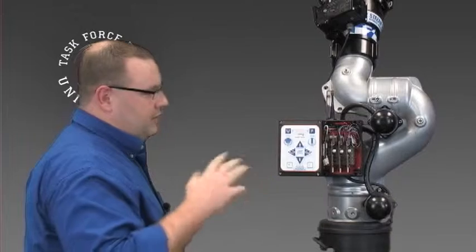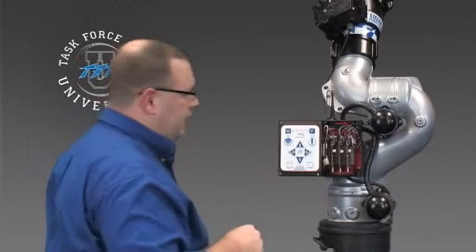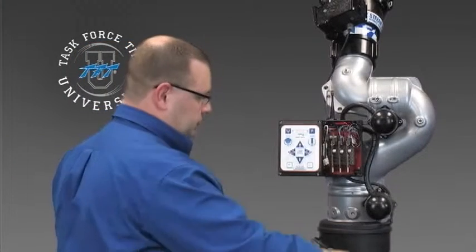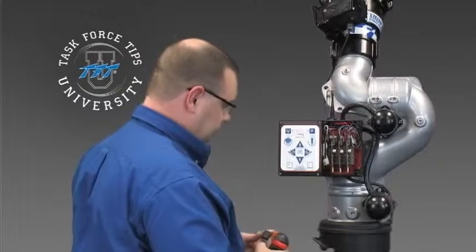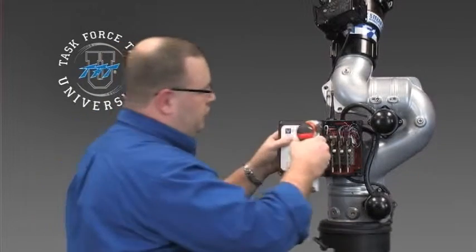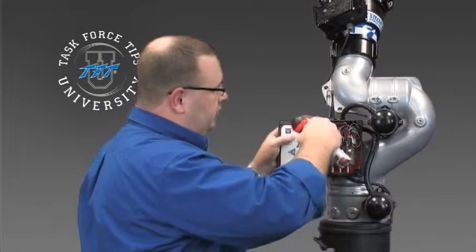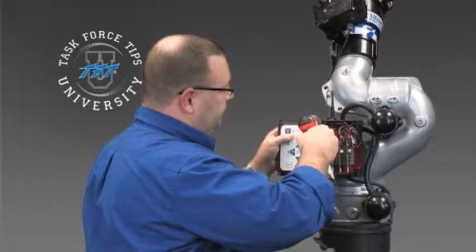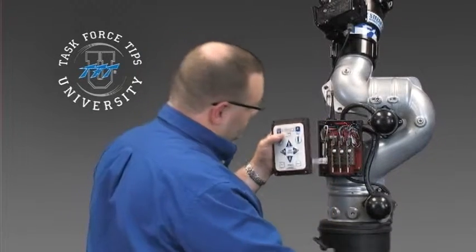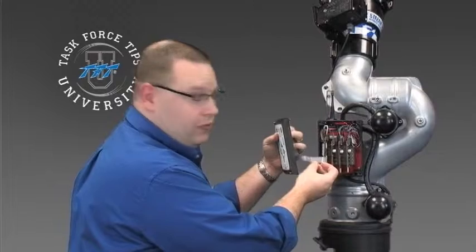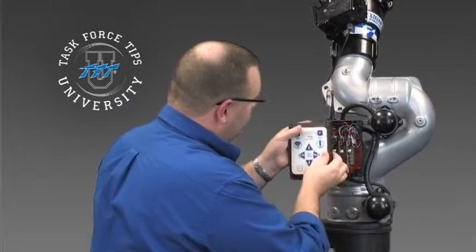So now what we want to do is go ahead and button everything back up. Go ahead and kill power again to the truck, then go ahead and remove that screw that was kind of holding us in place. Make sure that you tuck the ribbon cable behind the lid.